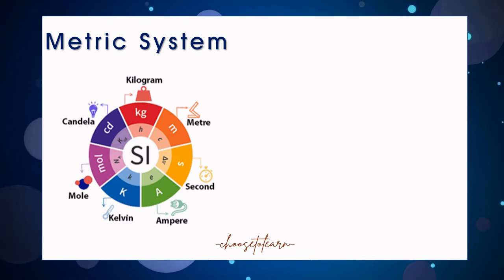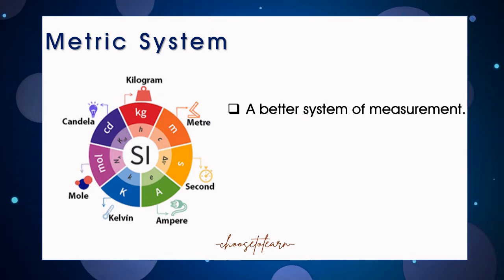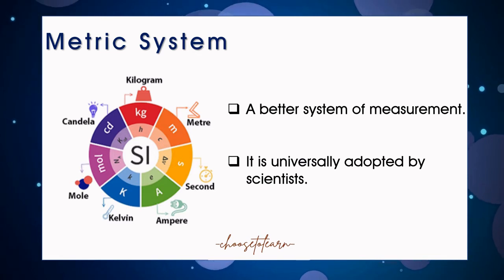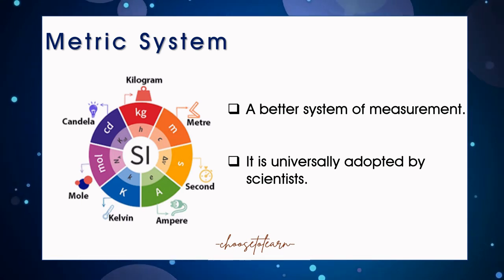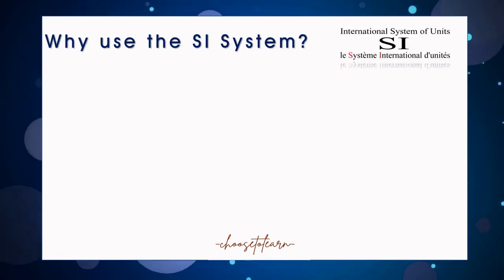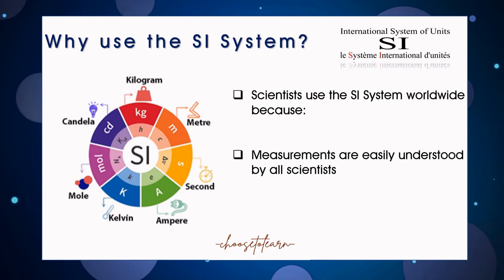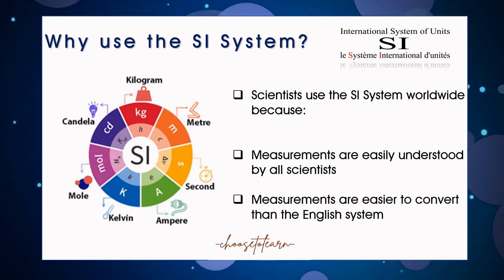Metric system is considered as a better system of measurement. Because, unlike the English system, this system was carefully planned. The System International, or SI, which is based on the metric system, is universally adopted by scientists. In our case, we will use the SI system, because measurements are easily understood by all scientists, and measurements in metric units are easier to convert than in English units.